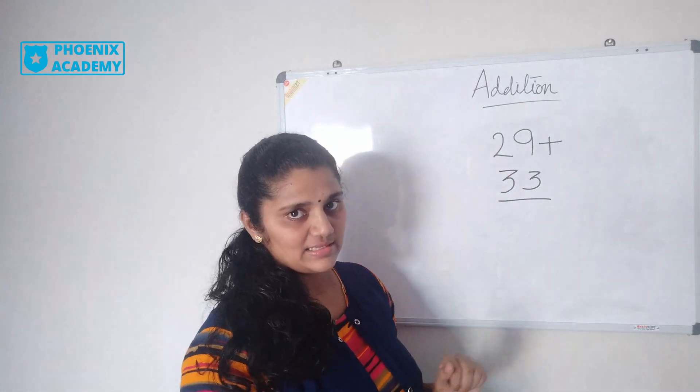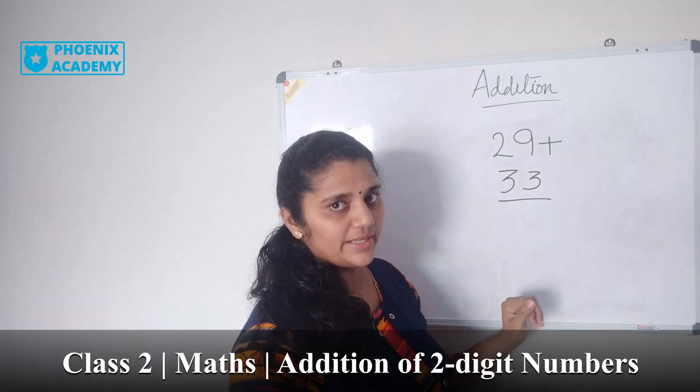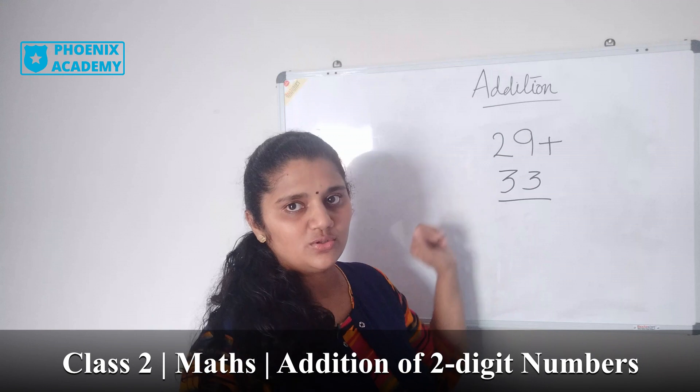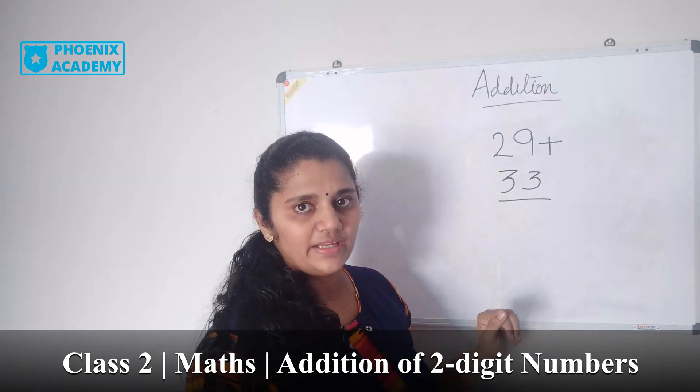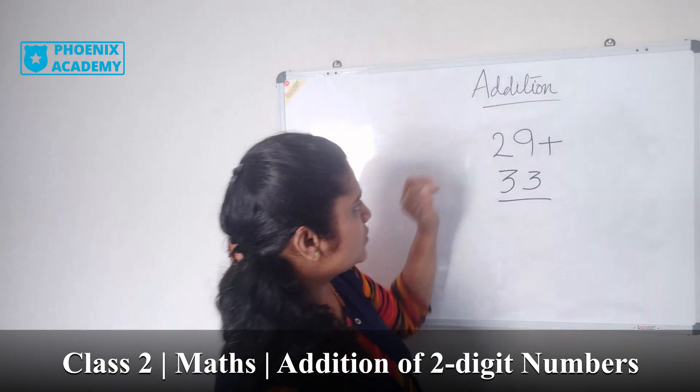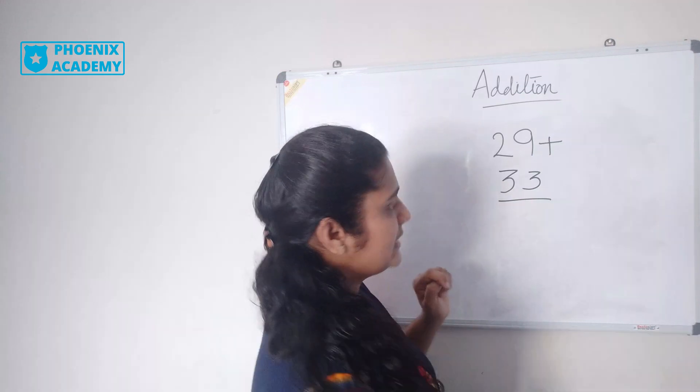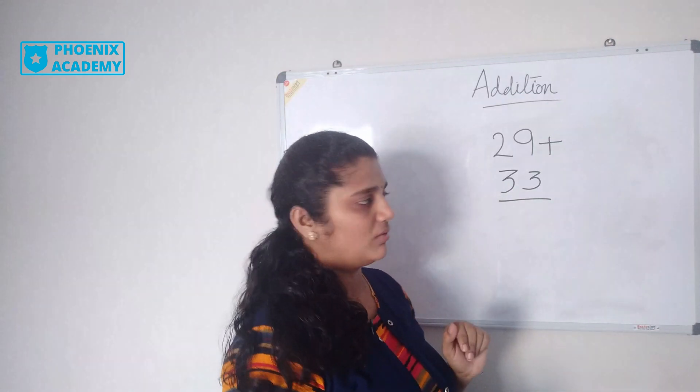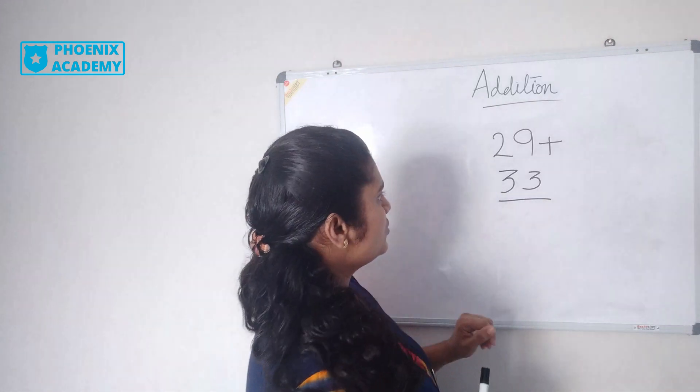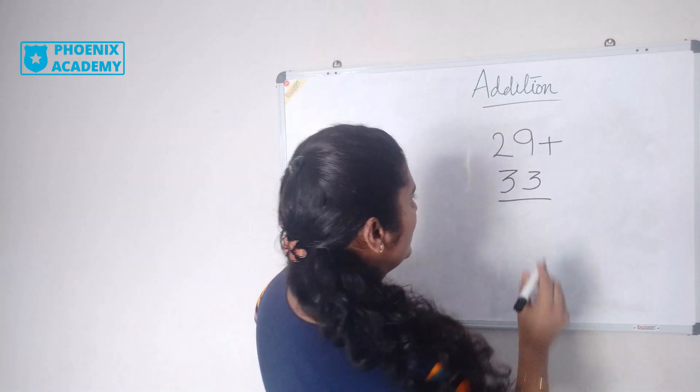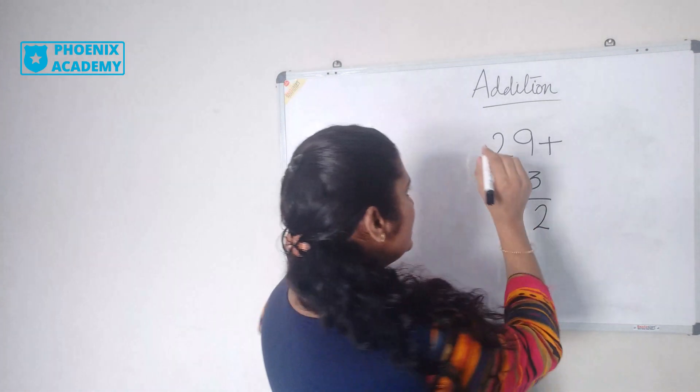Now let's try this example: 29 plus 33. 29 is 9 ones and 2 tens; 33 is 3 ones and 3 tens. Let's add the ones: 9 plus 3 is 12. 12 is 2 ones and 1 ten. I'll write 2 in the ones place and carry 1 to the tens place.